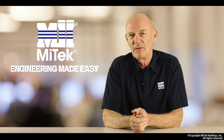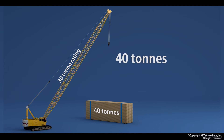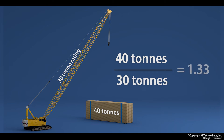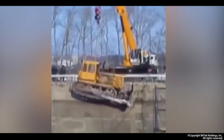Now let's look at the formula on a much greater scale — a crane that is rated to pick up 30 tons. For some reason the operator wants to pick up 40 tons. Our calculation simply becomes the actual load, 40 tons, divided by the allowable load, 30 tons — the rating of the crane. The answer is 1.33, and this is the result of that calculation.